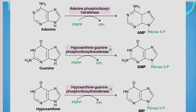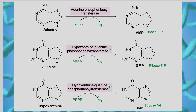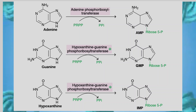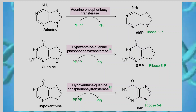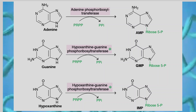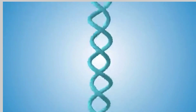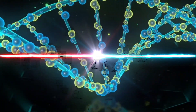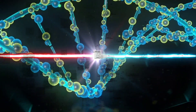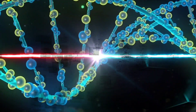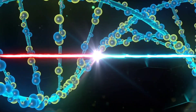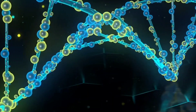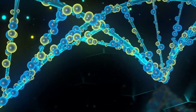Coming to pyrimidine salvage pathway — like purines which are salvaged to corresponding nucleotides — free pyrimidines, which are actually formed during degradation or breakdown of DNA and RNA, are collected, recovered, and reconnected with this active ribose unit to form corresponding nucleotides.